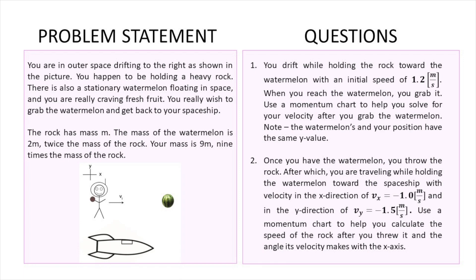Feel free to pause the video to copy the entire problem statement — this is kind of a long one. You are in outer space drifting to the right as shown in the picture, holding a heavy rock. There is also a stationary watermelon floating in space. The rock has mass m, the watermelon has mass 2m, and your mass is 9m.